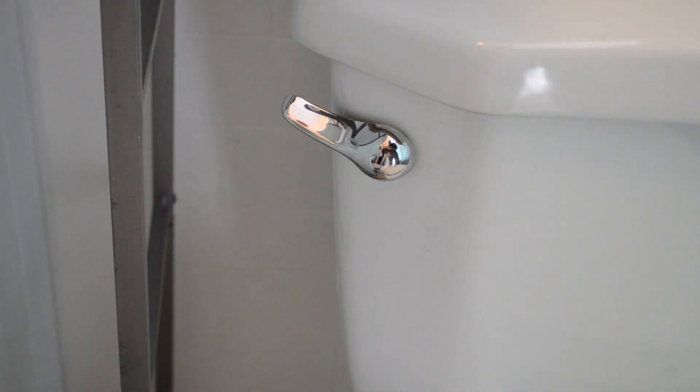If your toilet handle jiggles like this, the culprit is probably the flapper chain in the top of the toilet here.